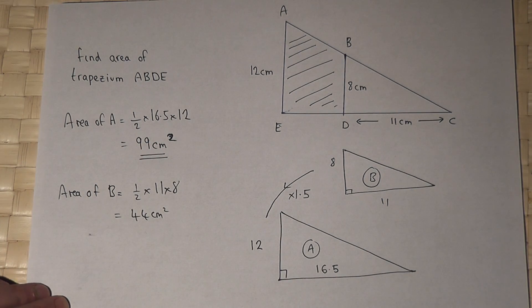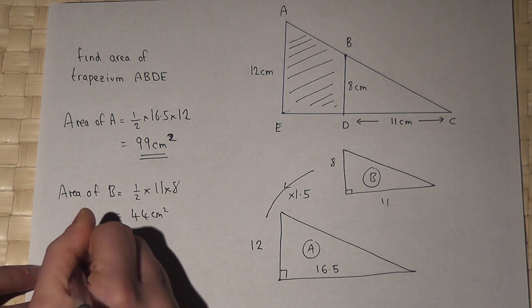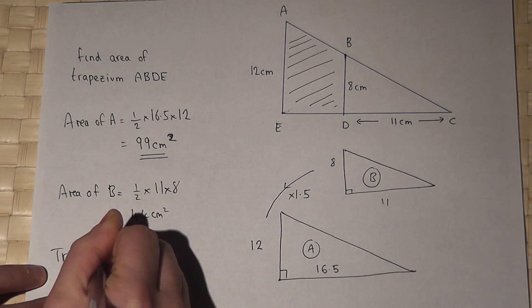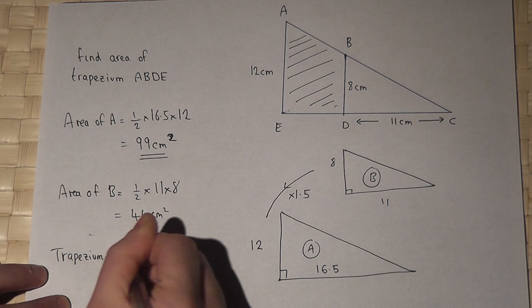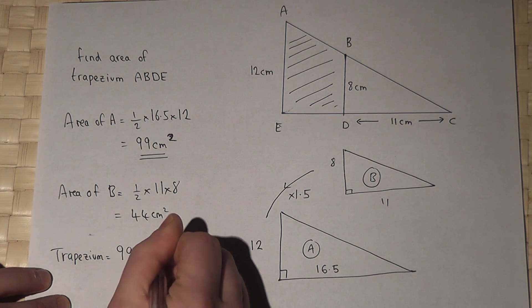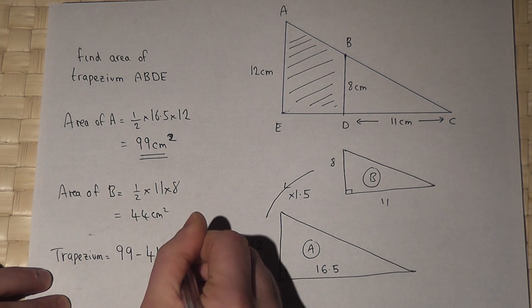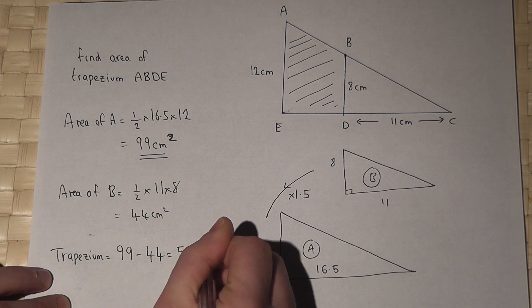So the trapezium equals 99 take away 44, which equals 55 centimeters squared.